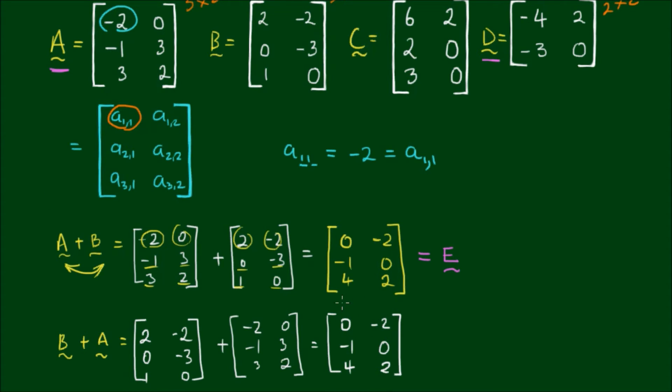So as we can see, this matrix is exactly the same as this matrix, which equals matrix E. So what we have demonstrated is that matrix addition is commutative. So we say that for two matrices of the same order, they satisfy the law of commutativity.